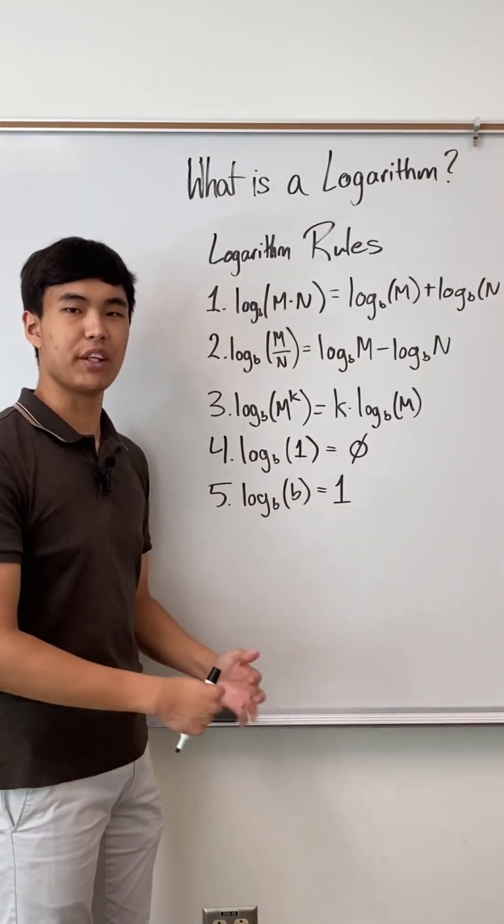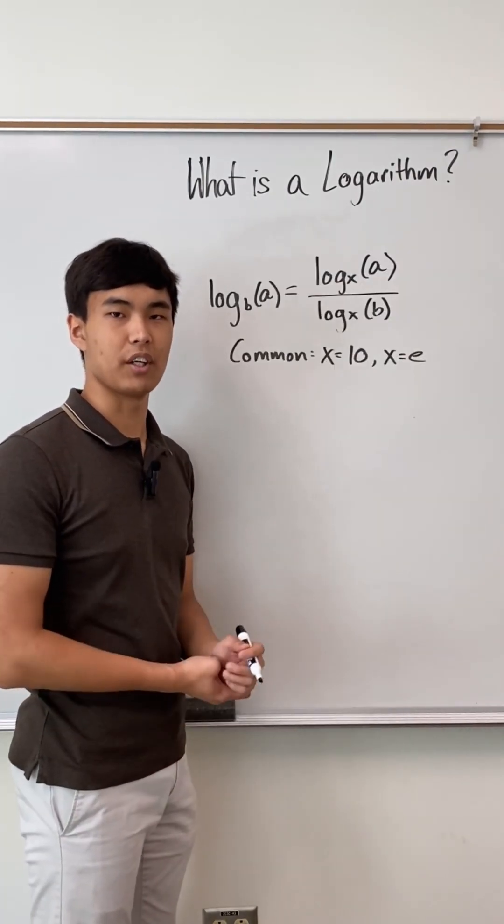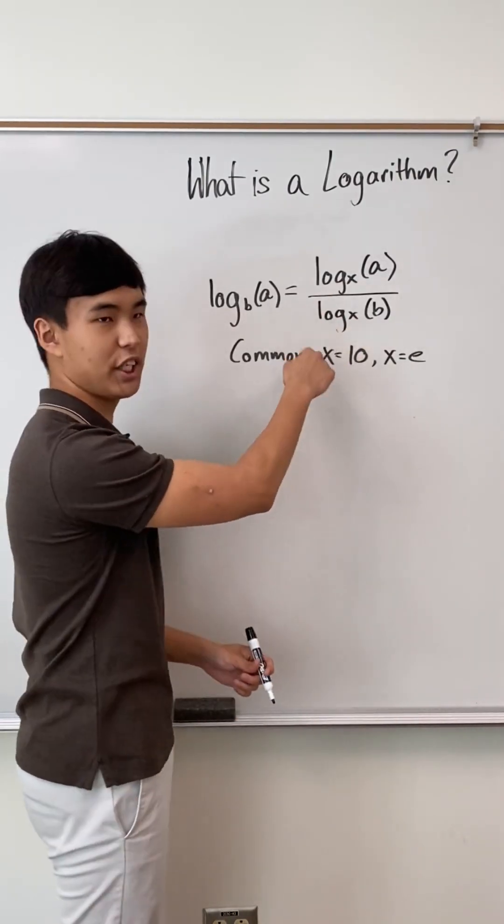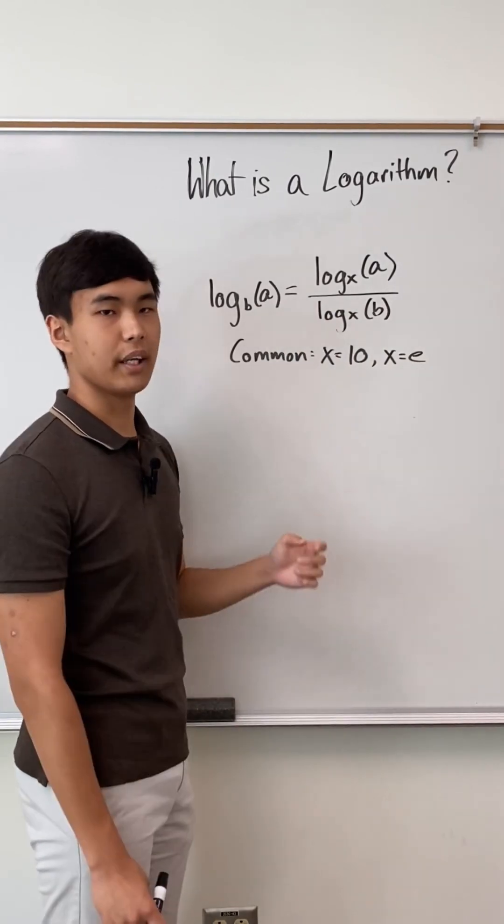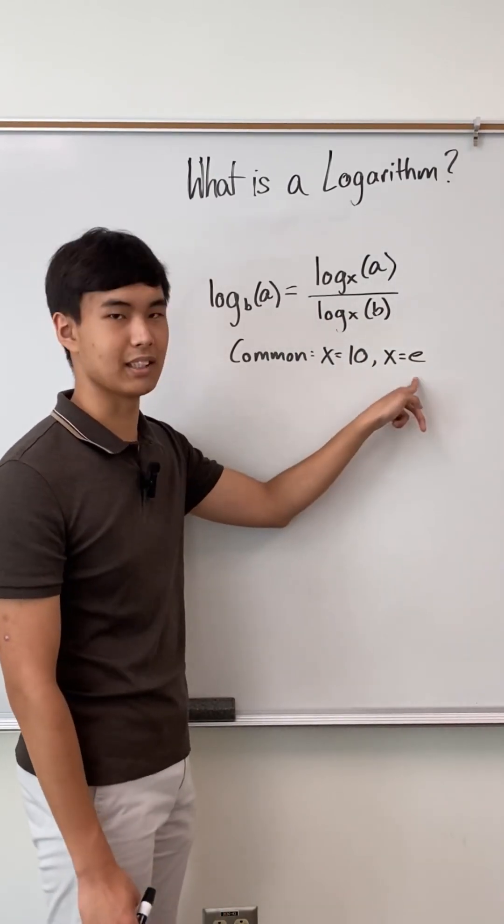These are some logarithm rules that you may find useful in solving problems. Some calculators just don't let you put your own base for a log. If you have that problem, then this is how you make a change of base, where x is anything you want it to be. Common picks for x are 10 and e, because this is a standard log and this is a natural log.